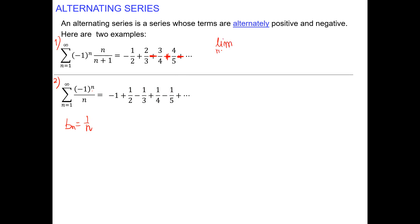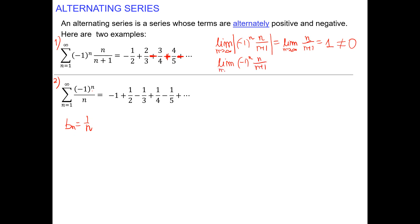Test for divergence. When we grab the alternating sequence — negative one to the n times n over n plus one — to find the limit, we apply the absolute value. The absolute value removes negative one to the n because it will always be positive. The limit of n over n plus one is one.